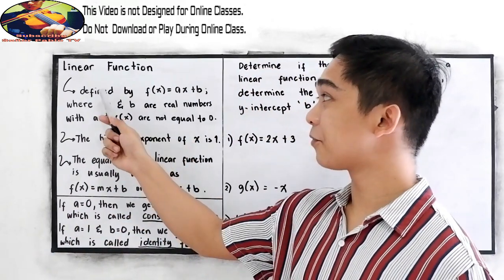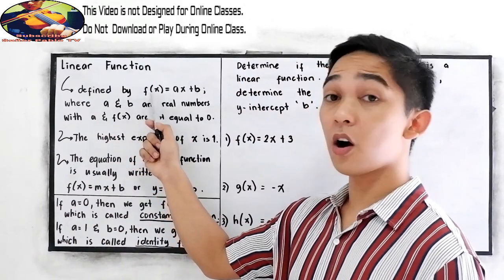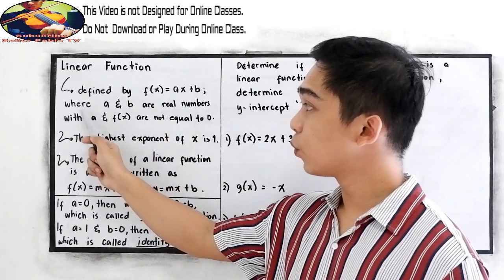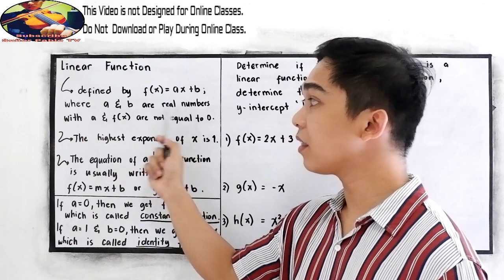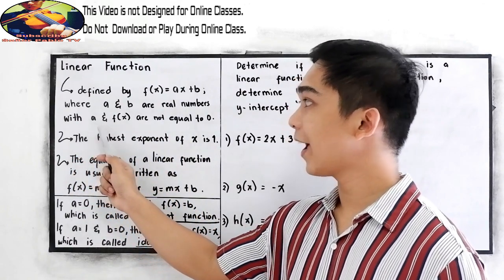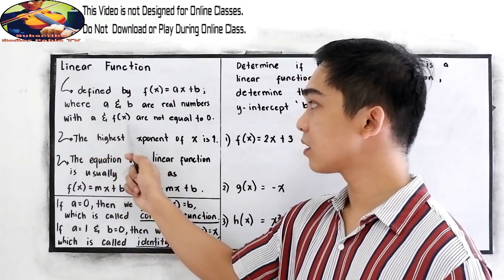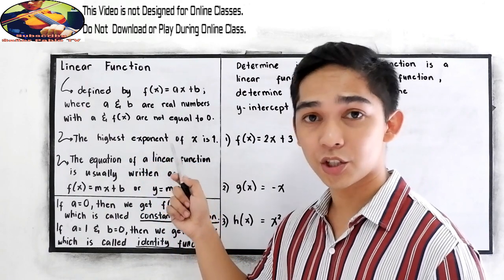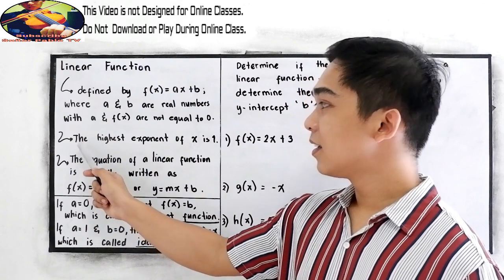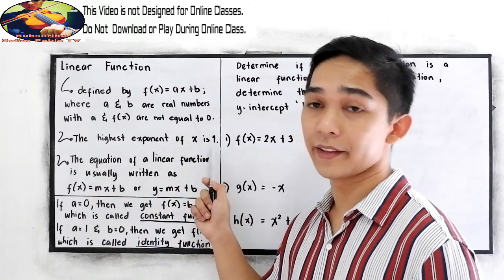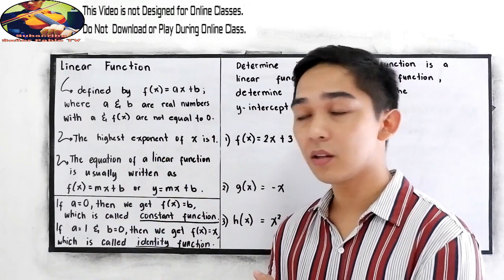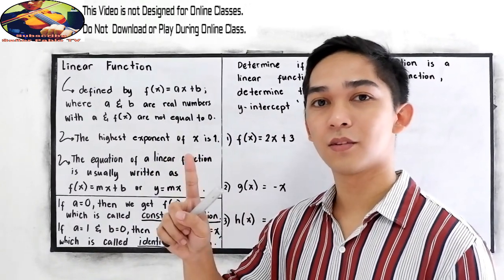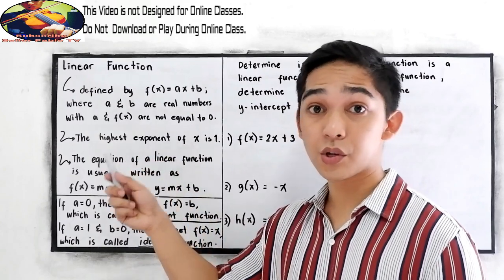A linear function is defined by f of x is equal to ax plus b, where a and b are real numbers with a and f of x not equal to 0. That is our condition. The highest exponent of x is 1, so in a linear function, our degree is 1. Exponent is also known as degree.